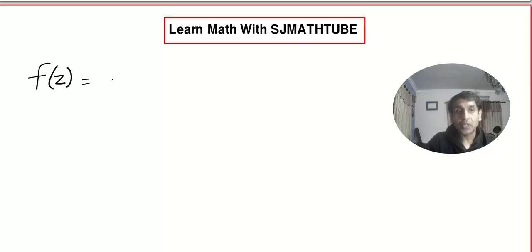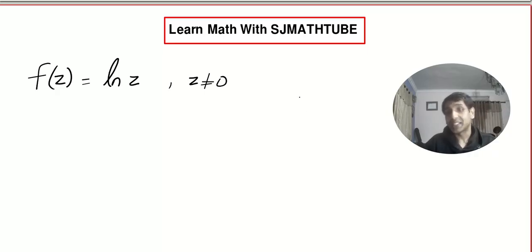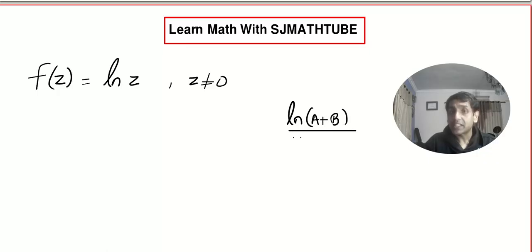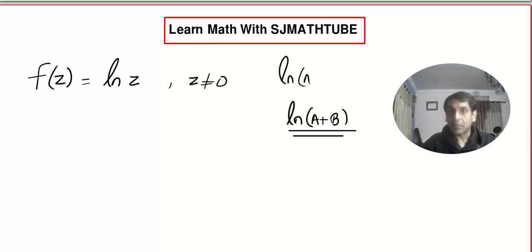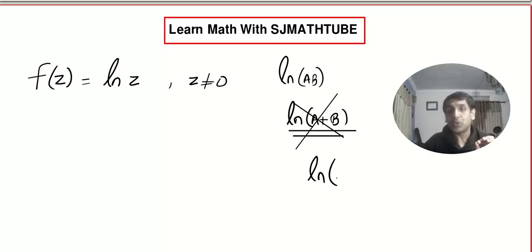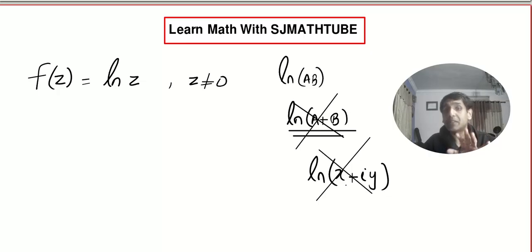Another question: suppose they ask you to prove that log z is analytic, where z ≠ 0. If you write log(a + b), we get stuck because there is no standard property for log(a + b). So log(x + iy) does not have a standard property.